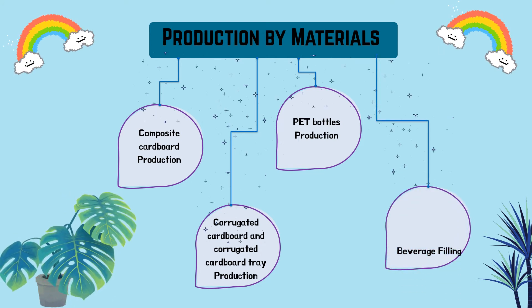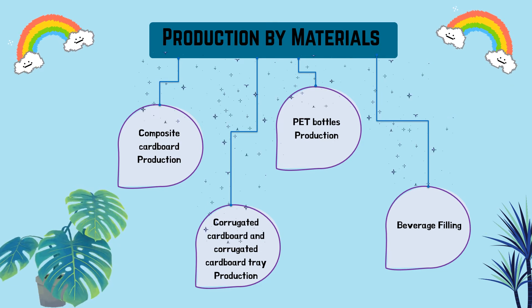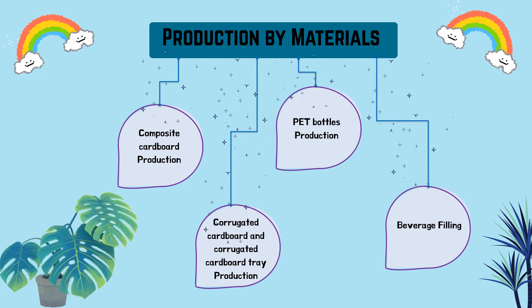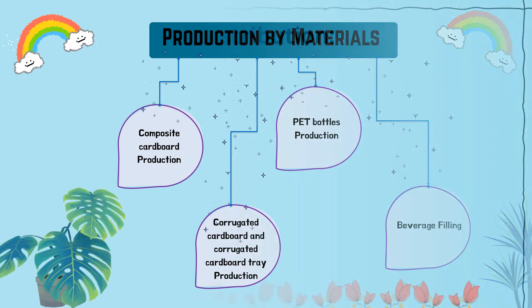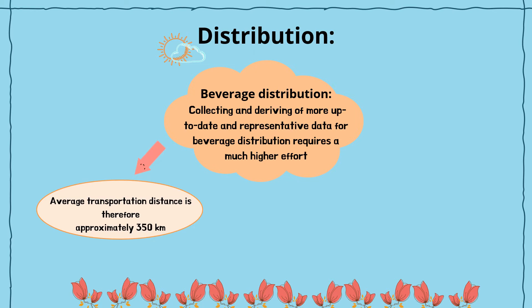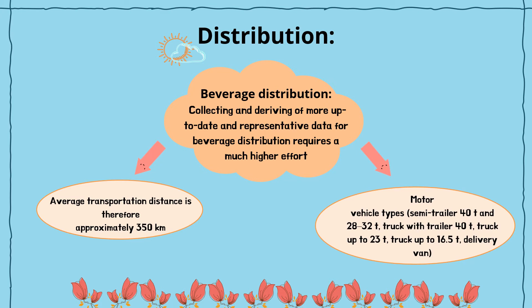Fourth, beverage filling: similar processes can be assigned to the filling of beverage cartons and PET single-use bottles. Distribution — beverage distribution: collecting more up-to-date and representative data requires much higher effort. Key factors include average transportation distances of approximately 350 kilometres, and motor vehicle types: semi-trailer 40T and 28–32T, truck with trailer 40T, truck up to 23T, truck up to 16.5T, and delivery van.